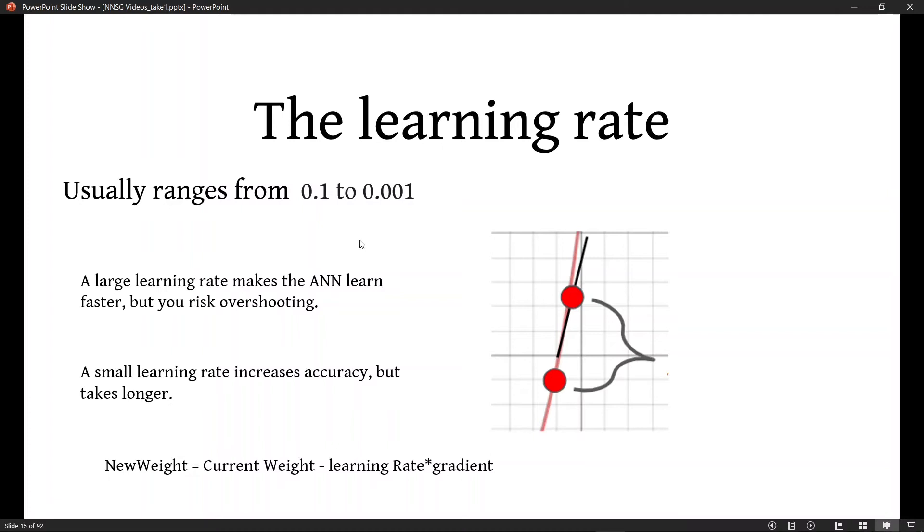One thing that I forgot to mention is that learning rates usually range from 0.1 to 0.001. So an example of a large learning rate would be 0.1, which risks overshooting. And at 0.001, it would just take forever.